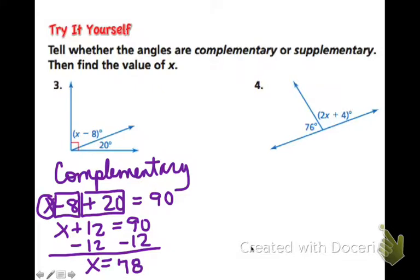x is equal to 78. And how can we check our work? We could take 78 minus 8, which would be 70. 70 plus 20 is 90, and we know that we're right.